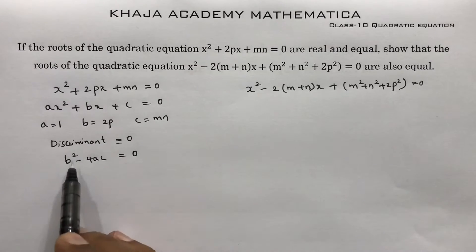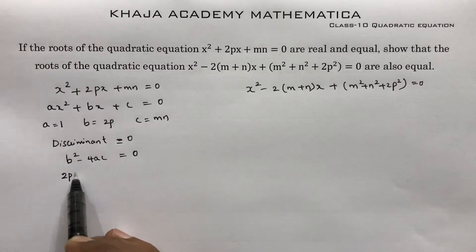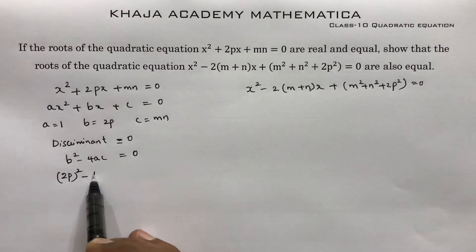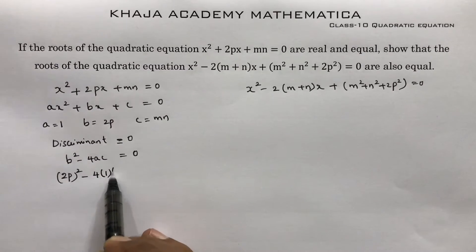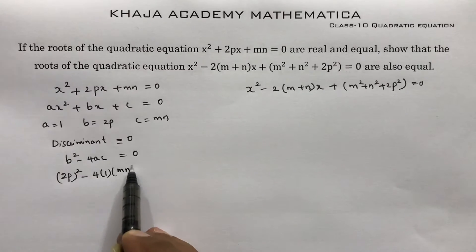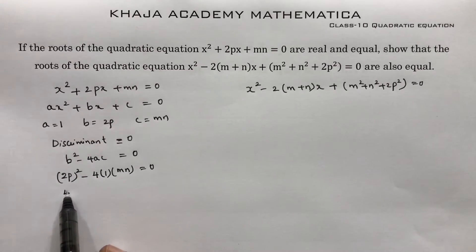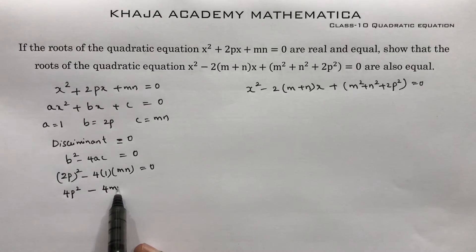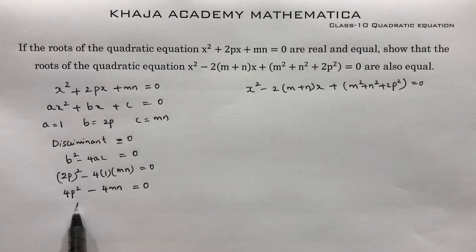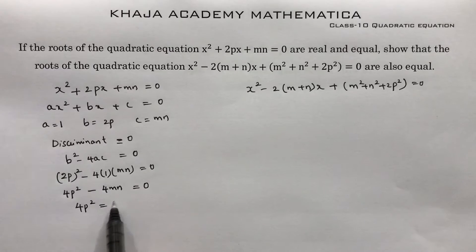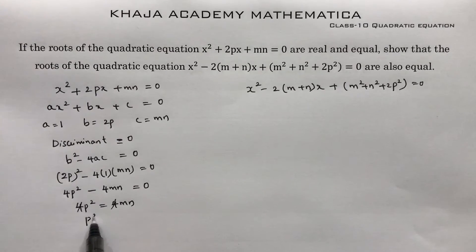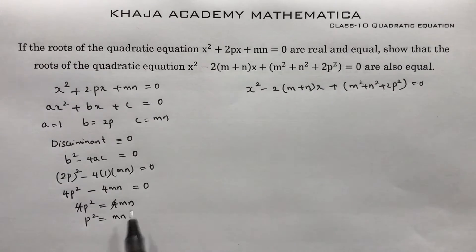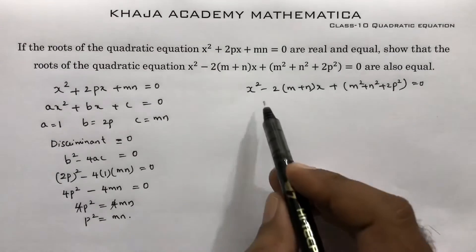Substituting: (2p)² - 4(1)(mn) = 0, so 4p² - 4mn = 0, which gives p² = mn. We keep this result for later use.